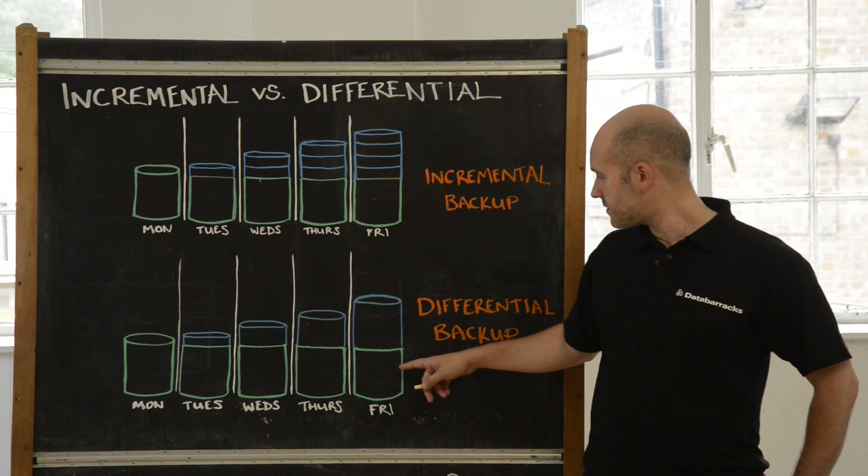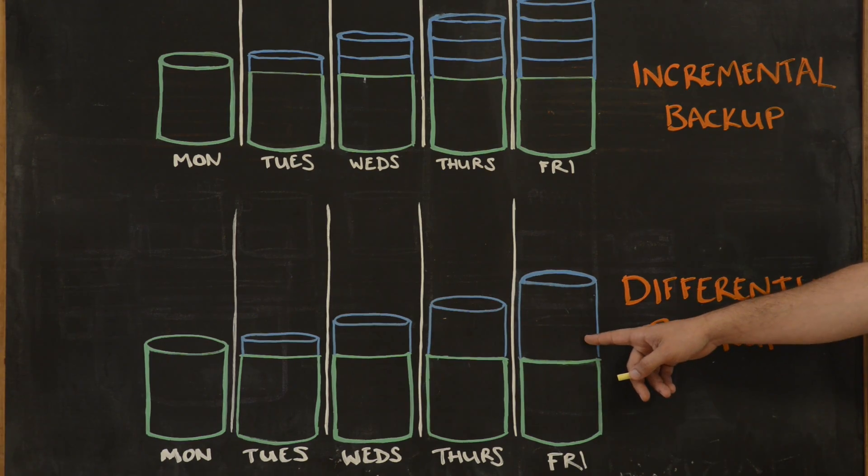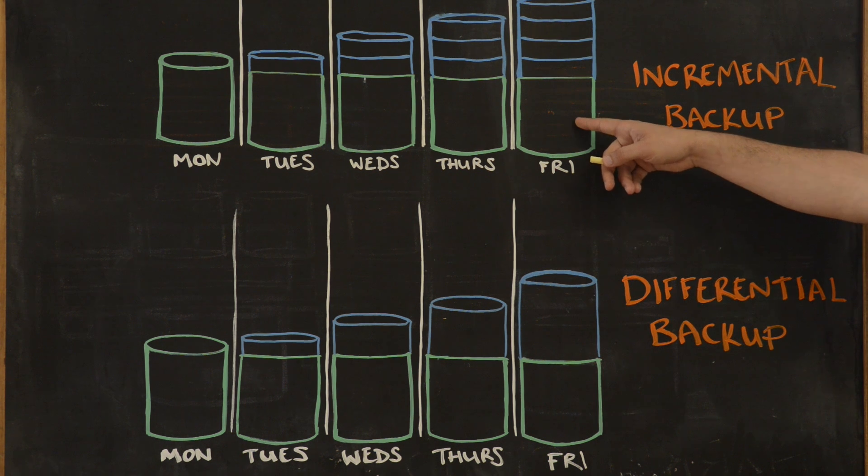For example, if you had to do a restore on a Friday, you would have had two tapes to manage, as opposed to using incremental backups, which would have involved five in this instance.